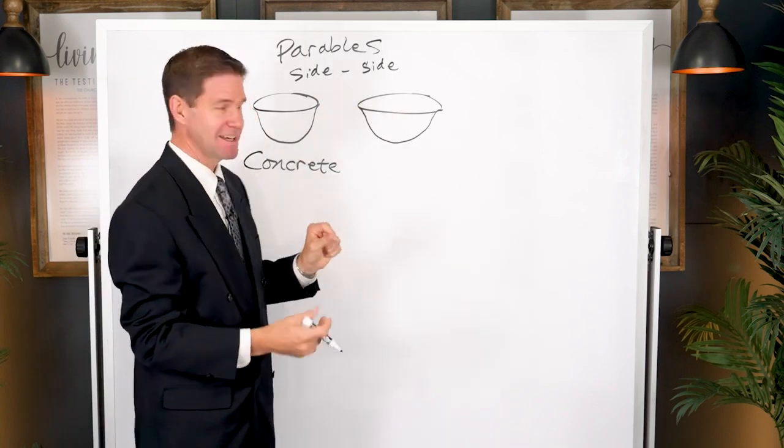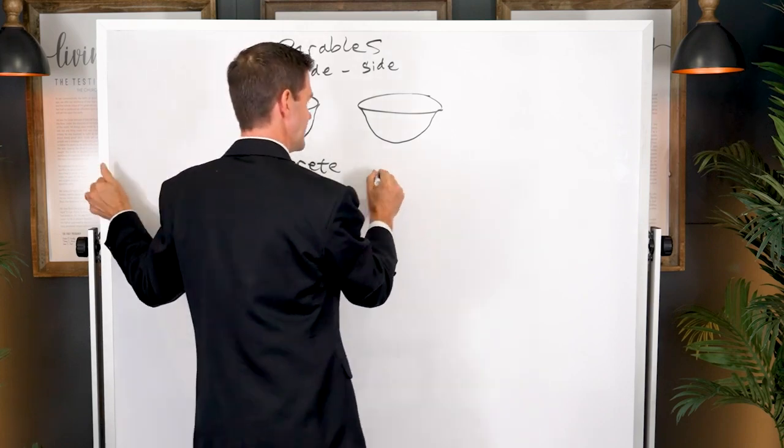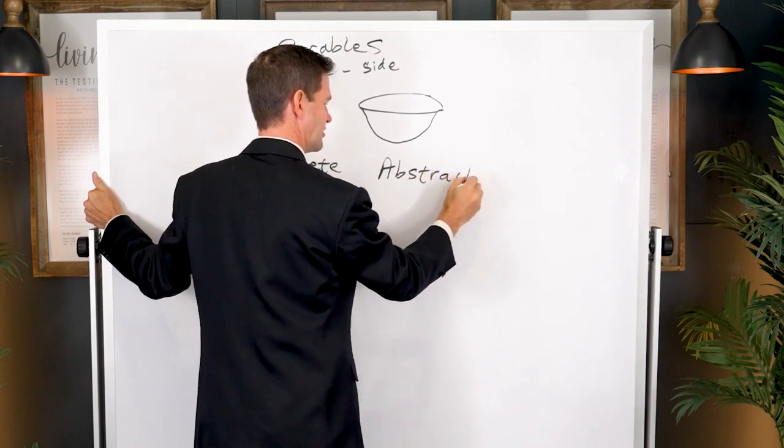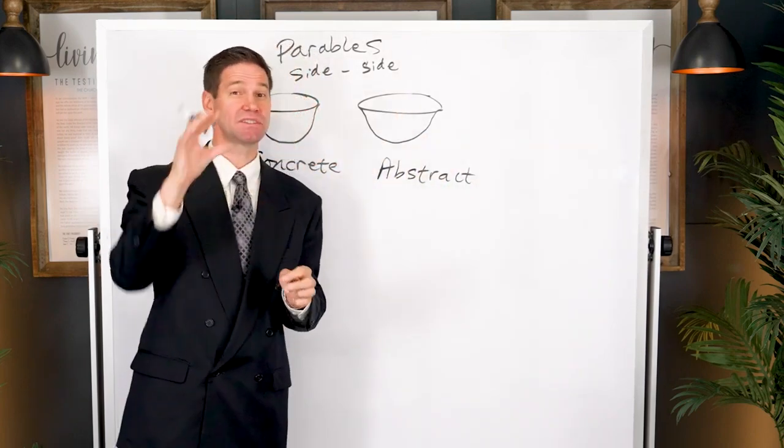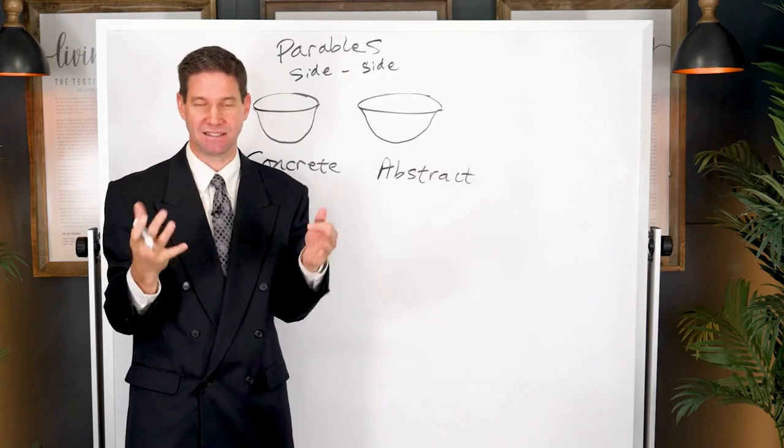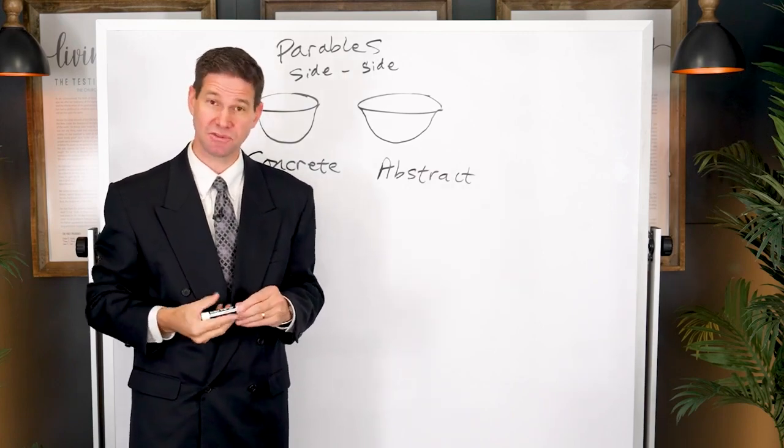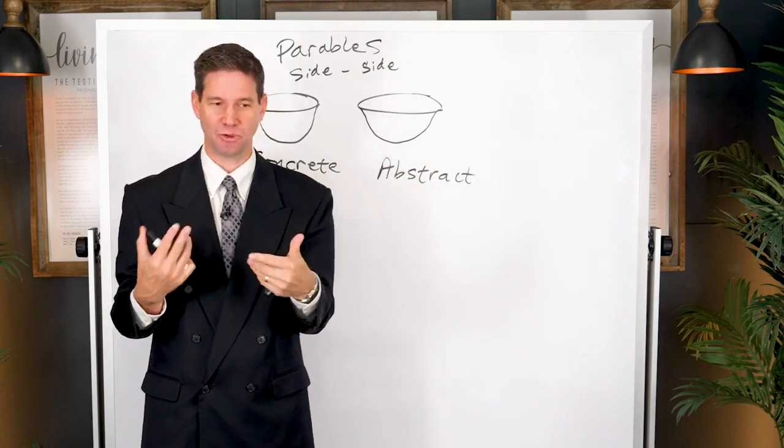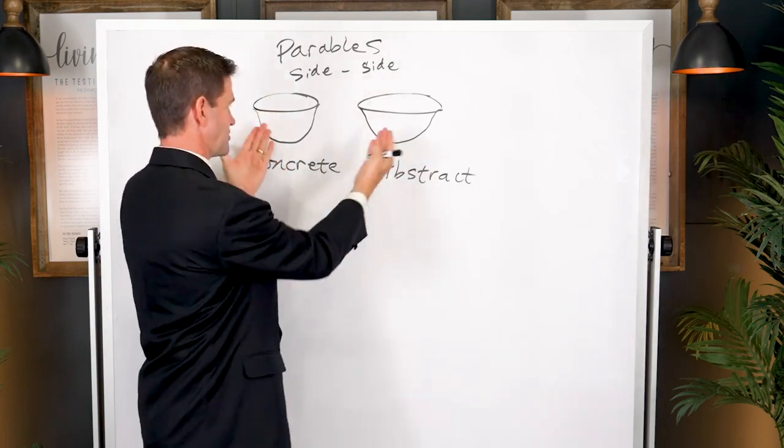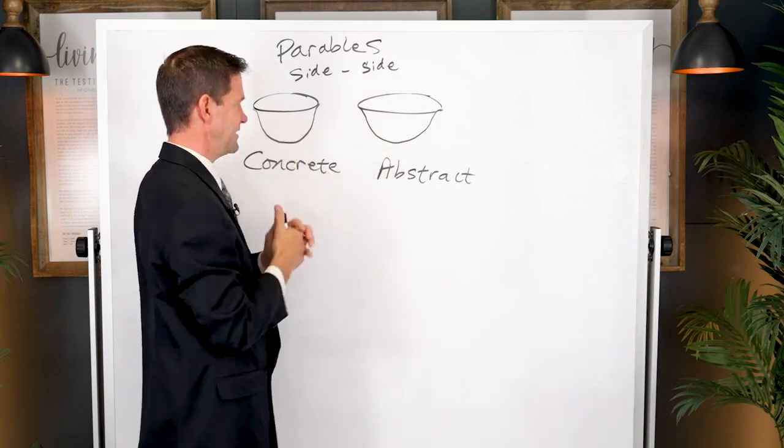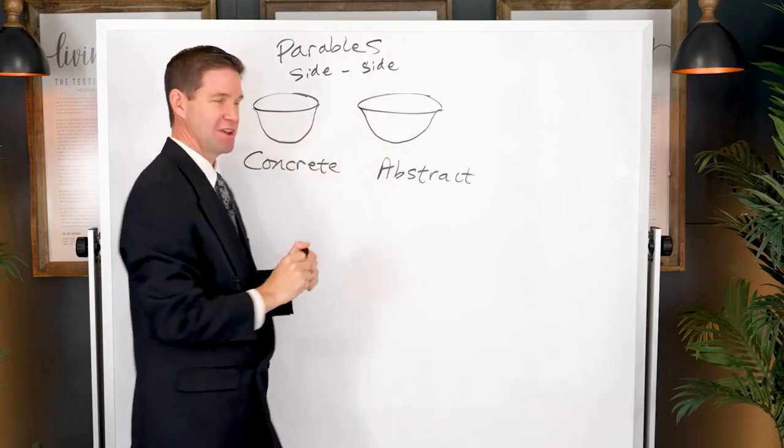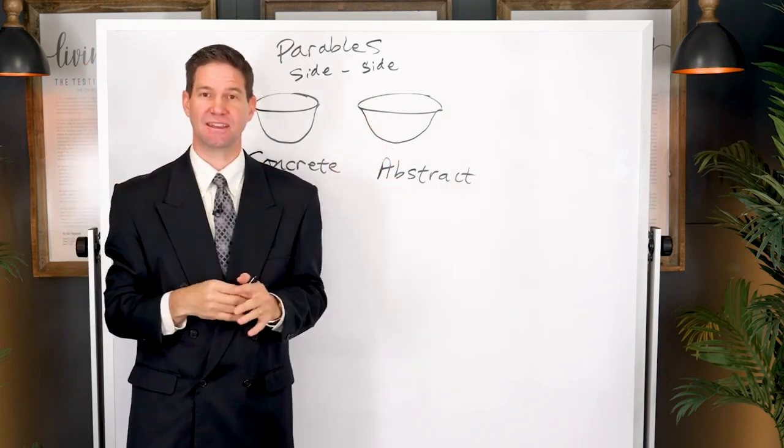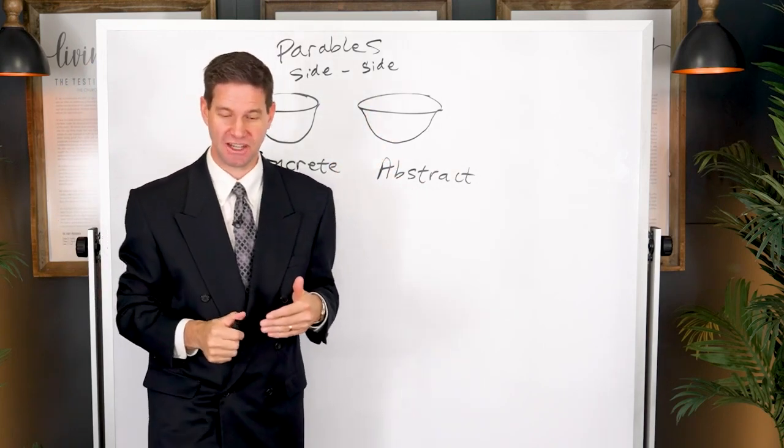What goes in the other bowl is something more abstract, theoretical, principle-based, some idea associated with the gospel of Jesus Christ that's harder to grasp with normal senses. By setting them side by side, you can teach incredible truths about these lofty ideals and principles of the gospel so they're more understandable.